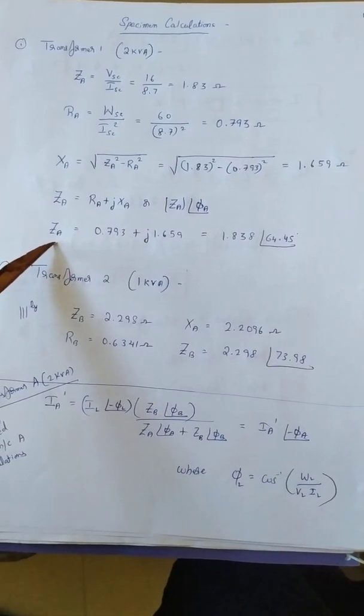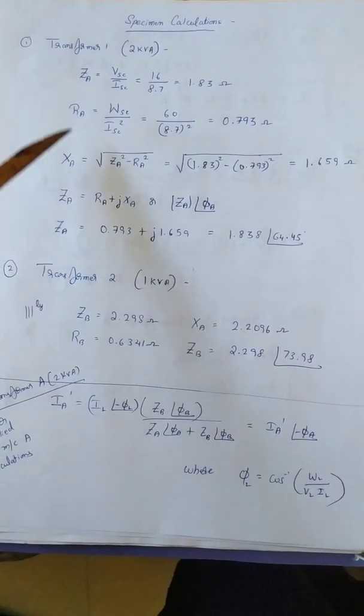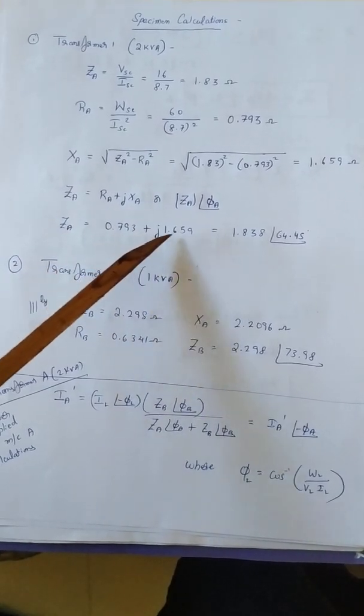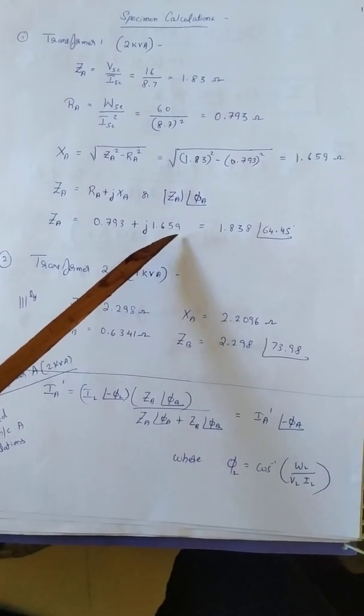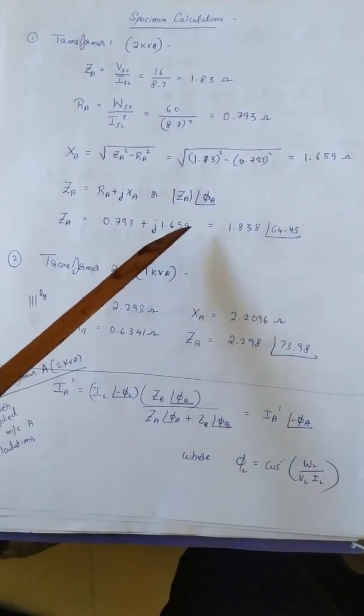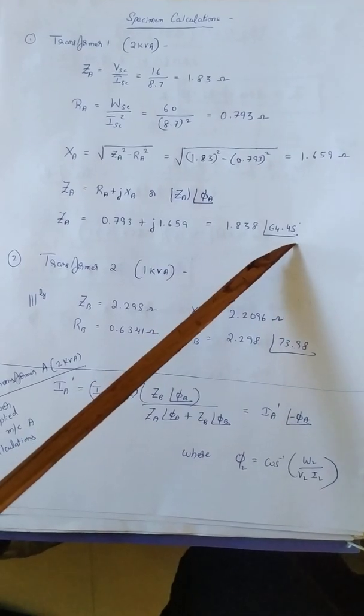First we write down ZA in rectangular form which is RA 0.793 plus JXA which is J1.659. And if we express the same in polar form we have 1.838 at an angle 64.45.